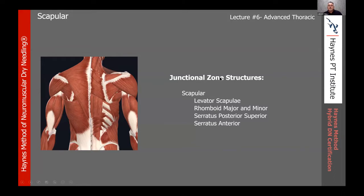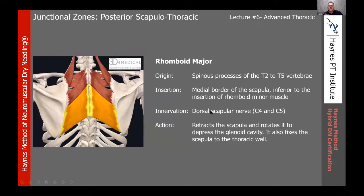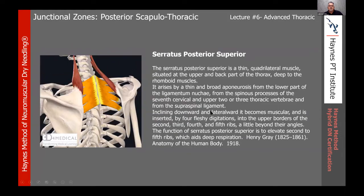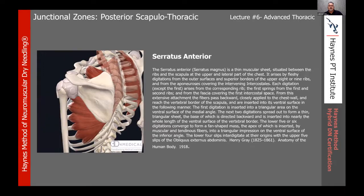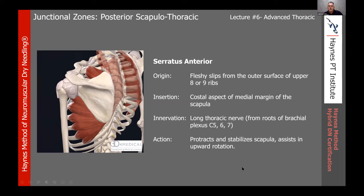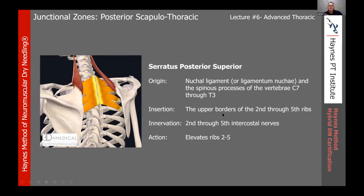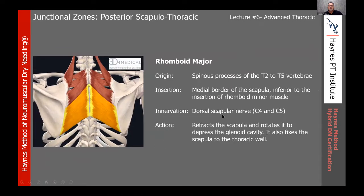Moving into the junctional zone structures of levator scap, rhomboid major and minor, serratus posterior superior, and serratus anterior. I'm going to stop my share for just a second to bring up the 3D anatomy piece.